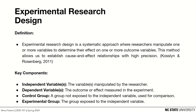Convenience sampling selects individuals who are readily available or easily accessible, potentially introducing bias and limiting the generalizability of results, but it catalyzes the testing and data collection phase. For example, in a study investigating the effects of background noise on problem-solving ability, researchers might set up a booth in a university library and invite passing students to participate. This approach is quick and easy but might not represent all demographics equally.